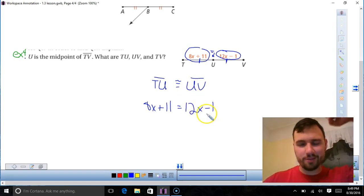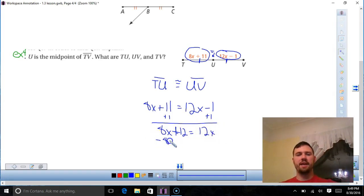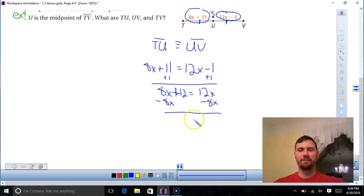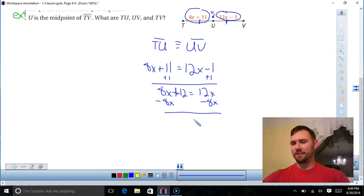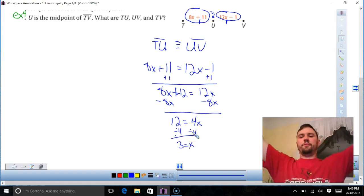Then it's good old algebra time. So I'm going to add one, add one. So I get 8x, 8x plus 12 is 12x. Subtract my 8x over. I get 12 equals 4x. Divide by 4. 3 equals x. And we're done. We did it.